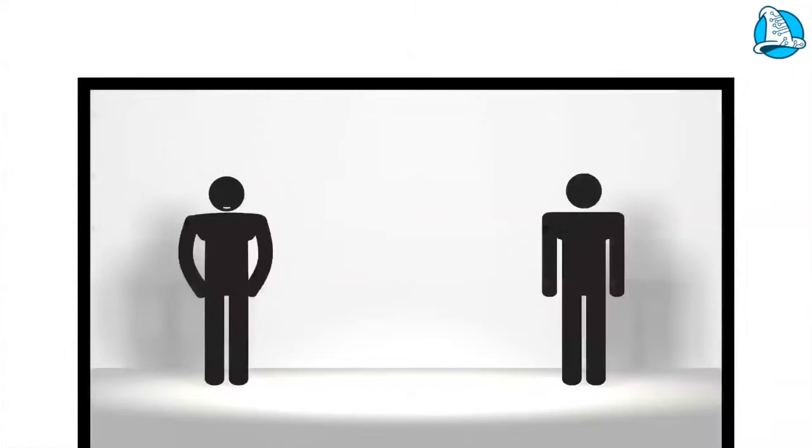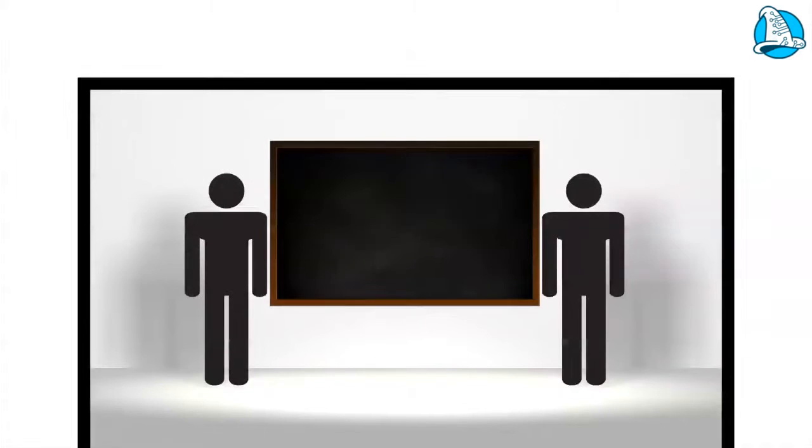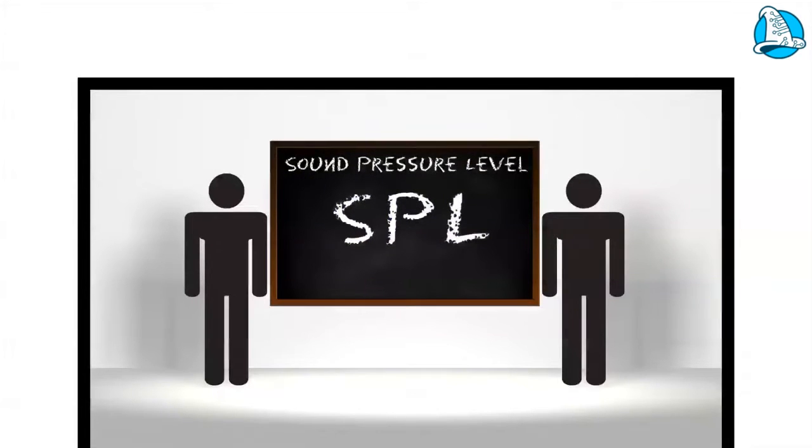Before we get there, we first need to explain how noise is measured. We quantify ambient noise in terms of its sound pressure level, or SPL, in decibels. Dedicated sound level meters are often used to measure SPL, though these days, most smartphones can do a reasonable job too.